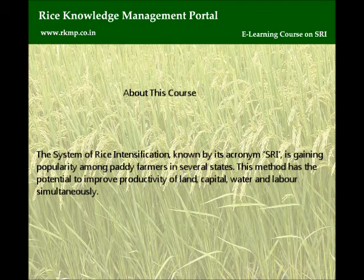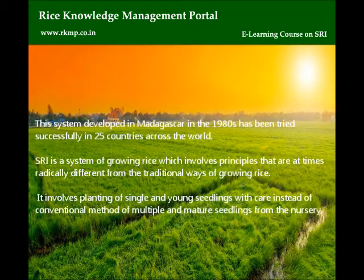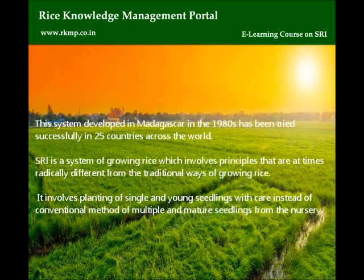This method has the potential to improve productivity of land, capital, water and labor simultaneously. This system, developed in Madagascar in the 1980s, has been tried successfully in 25 countries across the world. SRI is a system of growing rice which involves principles that are at times radically different from the traditional ways of growing rice.